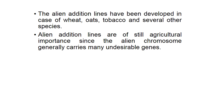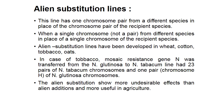The alien substitution line has one chromosome pair from a different species in place of a chromosome pair of the recipient species. When a single chromosome (not a pair) replaces a single chromosome of the recipient species, it is an alien monosomic substitution. In tobacco, the mosaic-resistant gene N was transferred from Nicotiana glutinosa to a tobacco line having 23 pairs of Nicotiana tabacum chromosomes and one pair of Nicotiana glutinosa chromosomes. Alien substitution lines show more undesirable effects than addition lines but are more useful in agriculture.